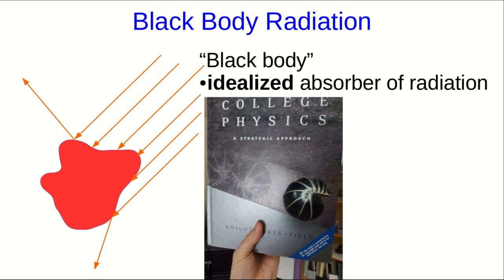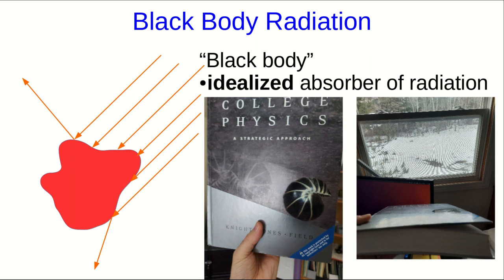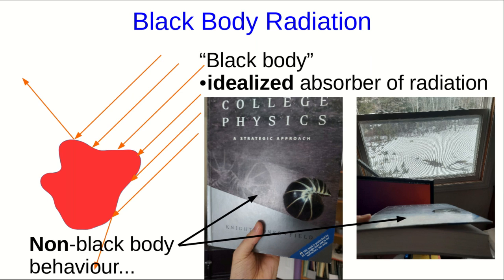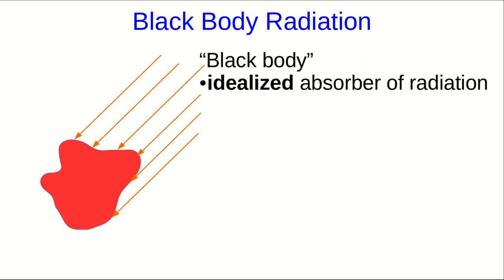For example, this textbook, if you look at it, you can see a little bit of reflection off of it, and in particular, if you arrange so that the light is reflecting off of it at a high angle, it reflects well enough that you can even see images in it. So, this is not black body behavior at all. What we're talking about with a black body is something where there's no reflection.